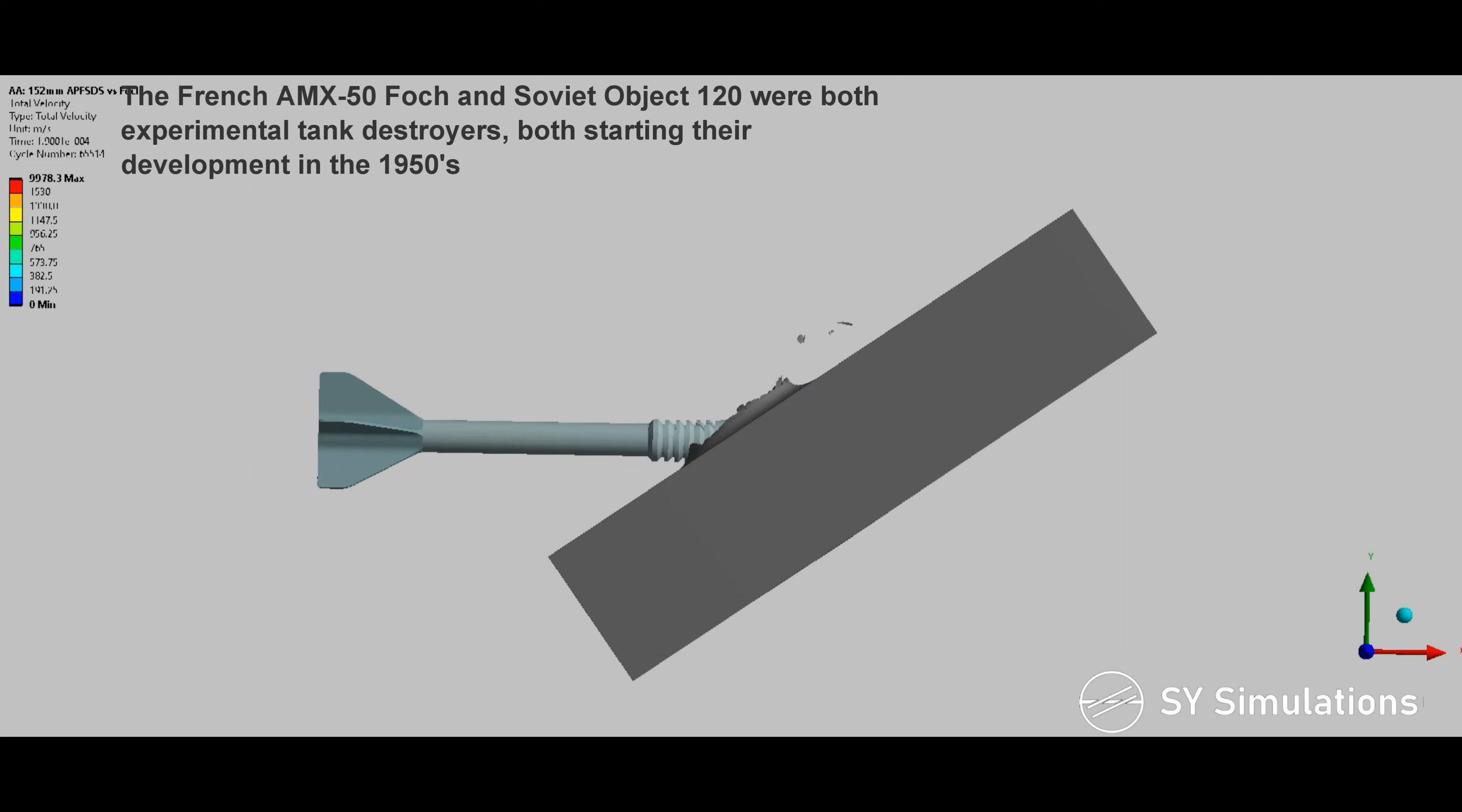The French AMX-50 Foch and Soviet Object 120 were both experimental tank destroyers, both starting their development in the 1950s.